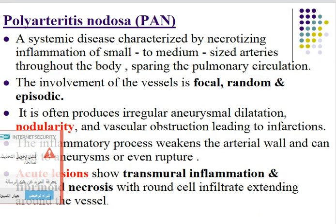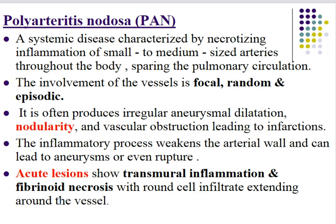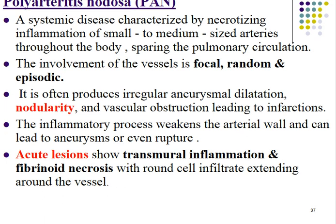The inflammatory process weakens the arterial wall — similar to atheromatous plaque — leading to aneurysm, nodularity, and even rupture of blood vessels. Polyarteritis nodosa is characterized by acute and healed lesions. Acute lesions show transmural inflammation — meaning the entire wall thickness including intima, media, and adventitia is inflamed — associated with fibrinoid necrosis and round cell infiltrate extending around the blood vessels.